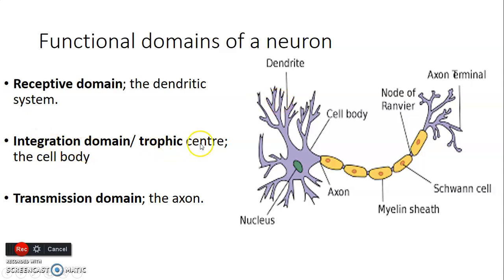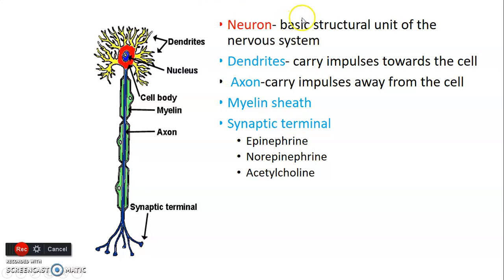The receptive domain is the dendrite, which receives the signal. The integrative domain, or trophic center, is the cell body, which interprets the signal. The axon is the transmission domain. You should be able to draw the structure of a neuron: the dendrite, cell body, and axons, which are myelinated and have the nodes of Ranvier — the gaps that are unmyelinated. There is also a myelin sheath formed by glial cells that wrap their cell membrane around the axon, and a synaptic terminal at the end where neurotransmitters such as epinephrine, norepinephrine, or acetylcholine are released to a neighboring neuron.